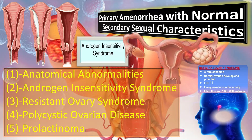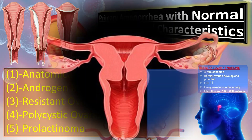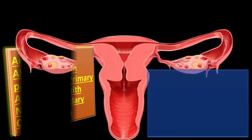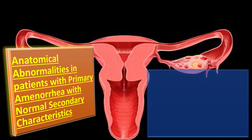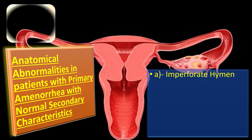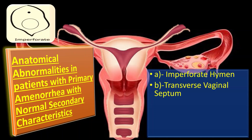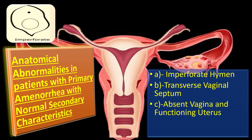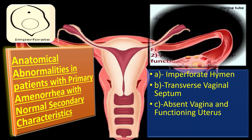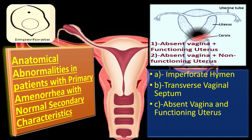The anatomical abnormalities we suspect in patients with primary amenorrhea with normal secondary sexual characteristics include: first, imperforate hymen; second, transverse vaginal septum; and third, absent vagina with a functioning uterus.